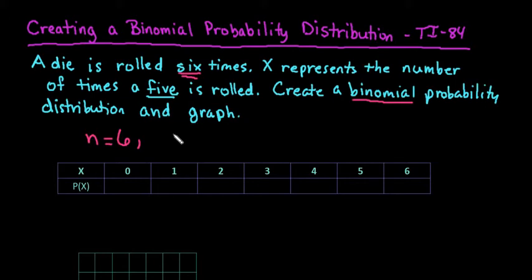The second thing is that the probability of success has to remain constant throughout the whole thing. So every time I roll a die, the probability of success stays the same. I still have a one out of six chance of rolling a five. Even if I got a five on the first one, I have a one out of six chance of rolling that five again on the next one.